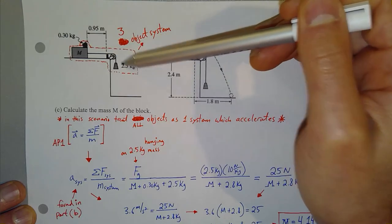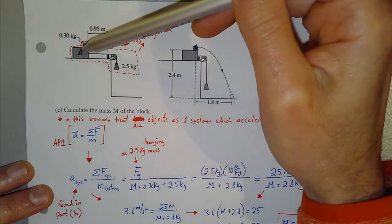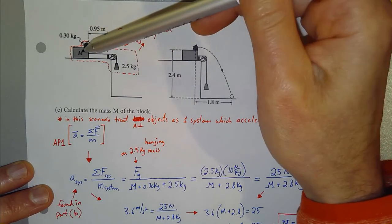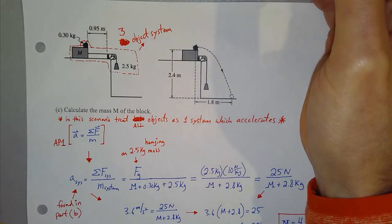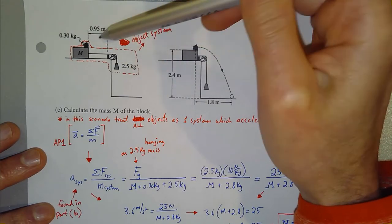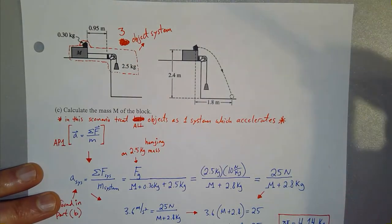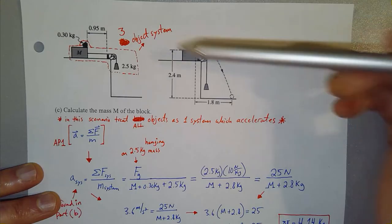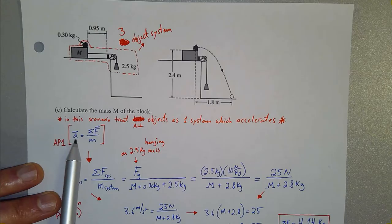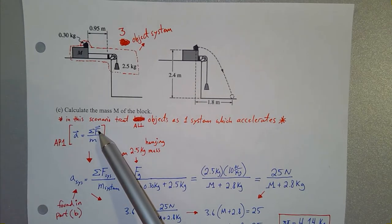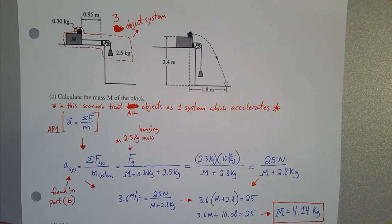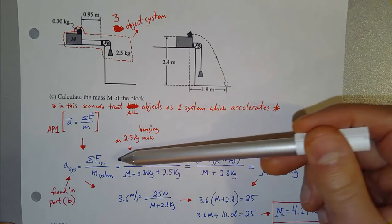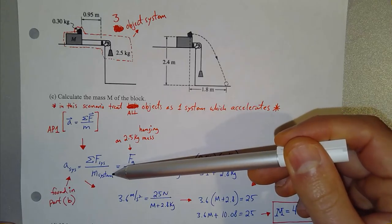Because the string connects them and isn't stretching, the block with ball on top and the hanging mass are all accelerating together — to the right and downward — with the same magnitude of acceleration. Treating all three objects as one system, we apply Newton's second law: the acceleration of the system equals the sum of the forces on the system divided by the total mass of the system.